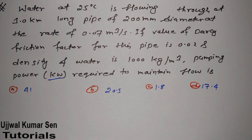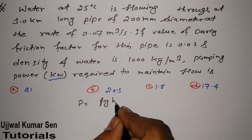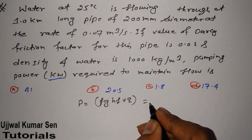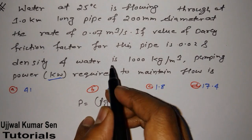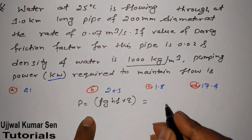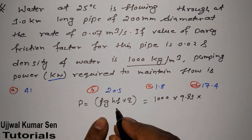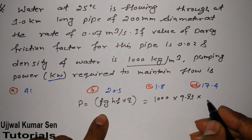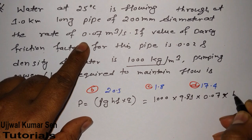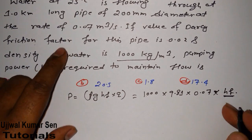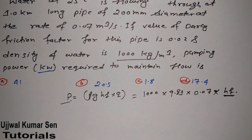We write: Power = ρ × G × H_F × Q. Now let's check what's given. Density ρ = 1000 kg/m³. G we know. Head loss H_F is not directly given. Discharge Q = 0.07 m³/s is given. So if we can find H_F, we can easily find the required power.